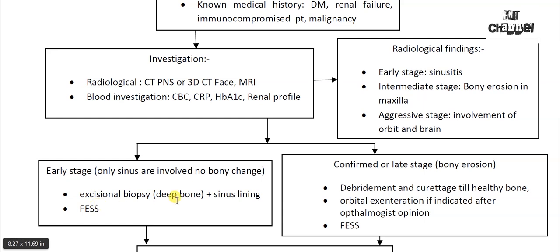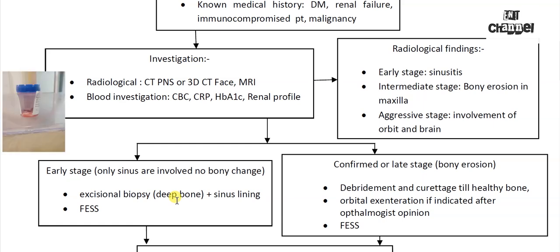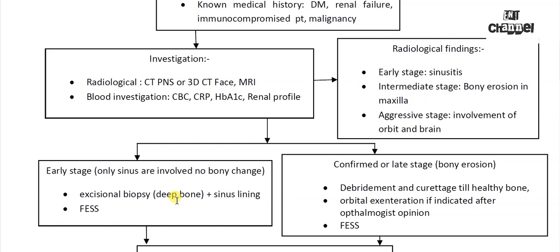In the early stage you can go for excisional biopsy, meaning during taking the biopsy you can remove the whole muck and debride the sinus lining if it is suspected to be involved, with routine functional endoscopic sinus surgery. When bony erosion is present, you can't leave osteomyelitic bone — you have to debride and curettize till healthy bone.